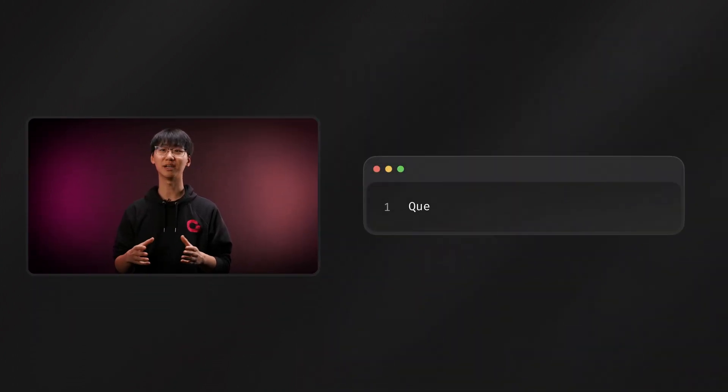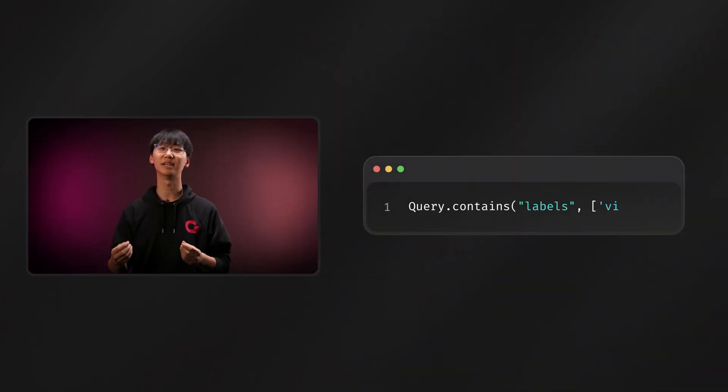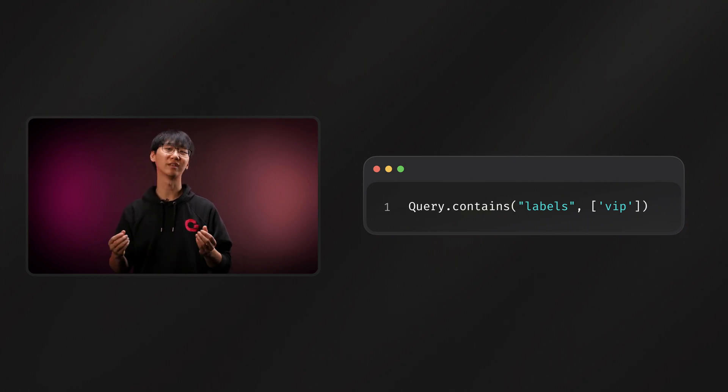We've added Contains Queries for Arrays, which lets you check if an array contains specific items. For example, you can find all users with a common label.